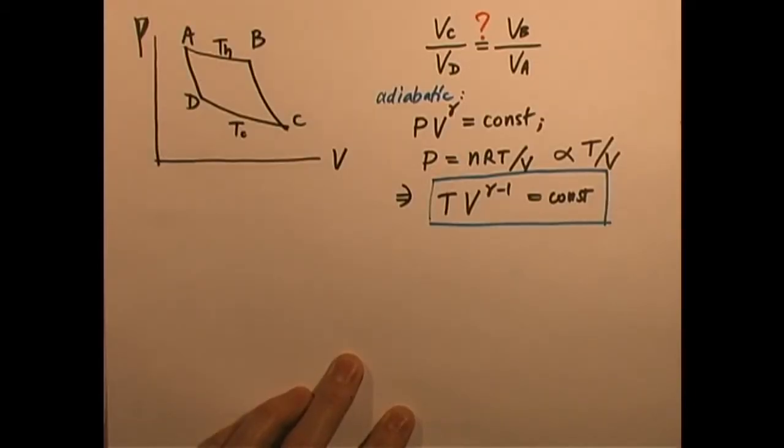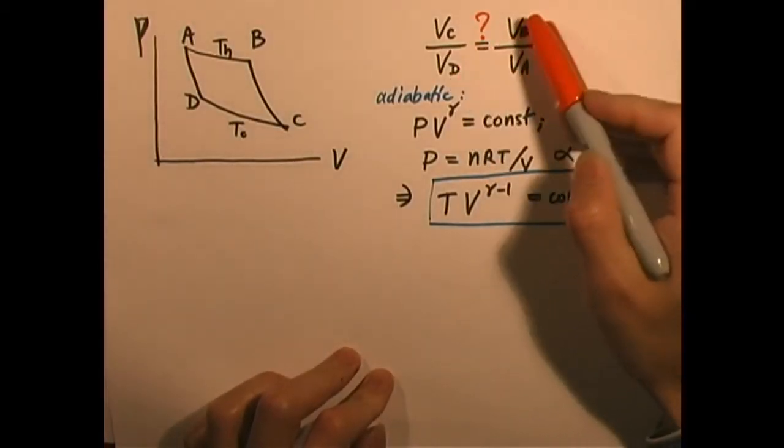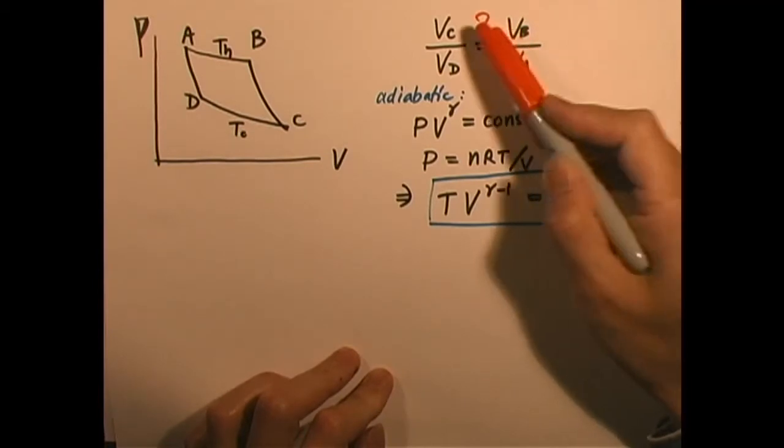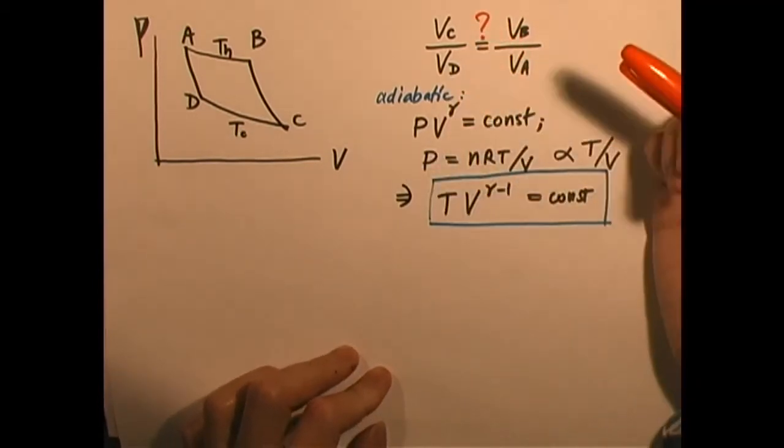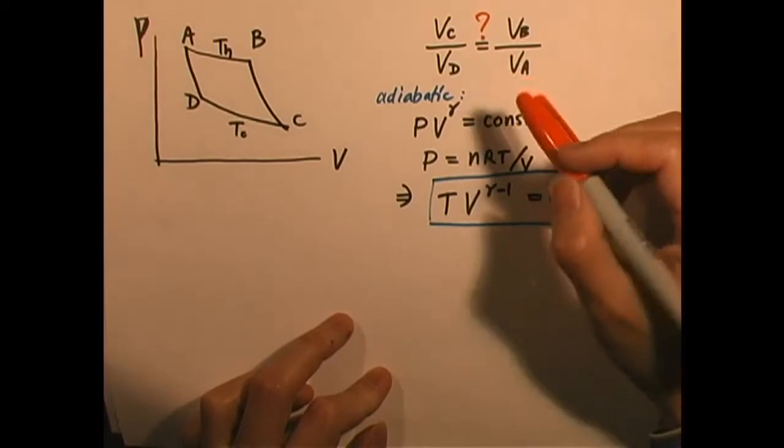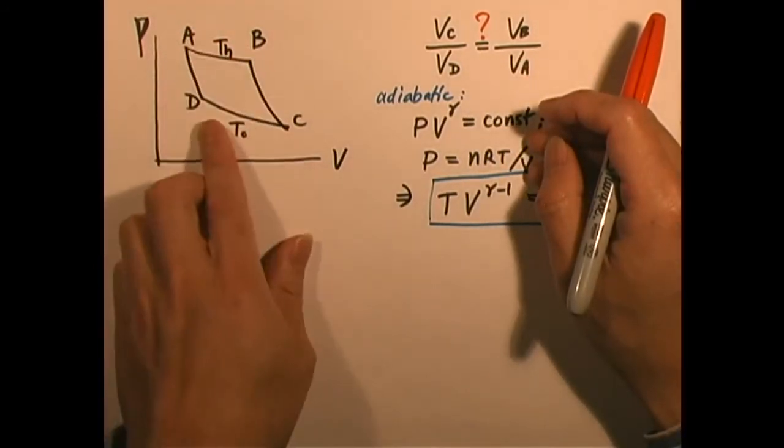Okay, so let's take a look at whether or not Vc over Vd equals Vb over Va. We have all reasons to believe that this is the case, but let's prove that. We can relate Vb, Va, Vd, Vc because of the fact that here you have an adiabatic process.